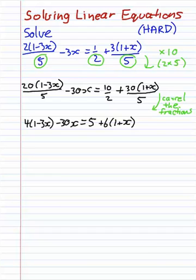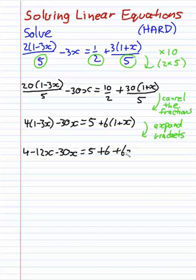So where do we go from here? Well, I think it's pretty clear that we need to expand the brackets. So let's write that down. So we want to expand the brackets. So what we get on the left-hand side here is 4 minus 12x minus 30x is equal to 5 plus 6 plus 6x.